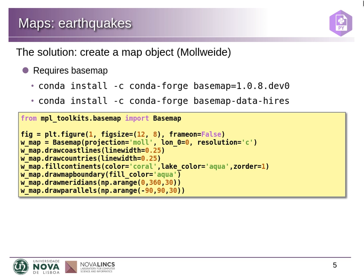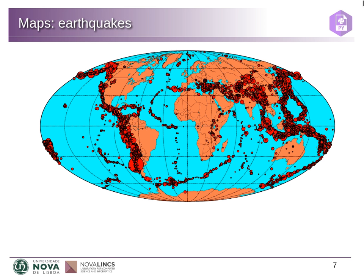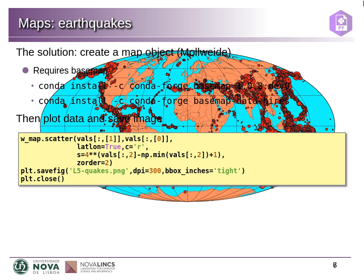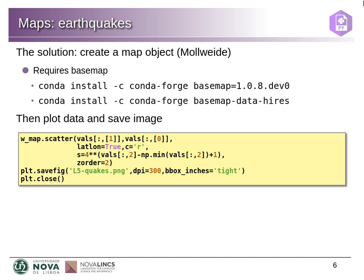Then we draw the coastlines and continents, fill them with different colors for the land and ocean, and we can also draw parallels and meridians. So we have this representation with oceans, continents, parallels and so forth — all automatic with this class. And there's also the advantage that we can do a scatter plot, using latitude and longitude directly, specifying that we're plotting in latitude/longitude coordinates. The map object will convert these into positions on the graph by computing the projection.